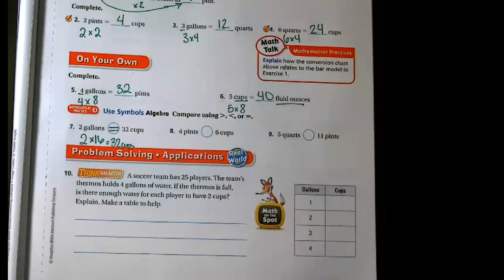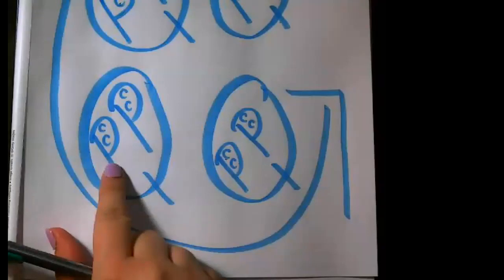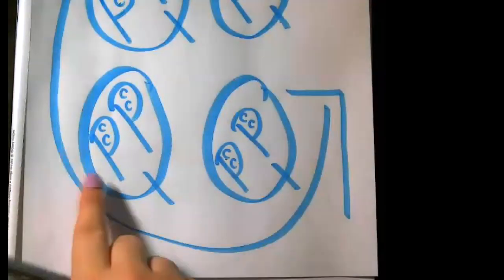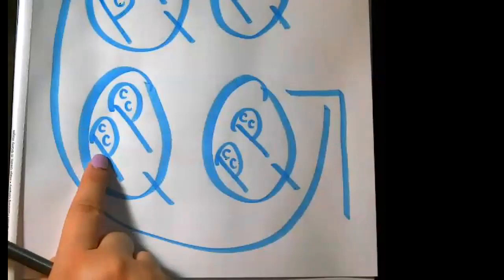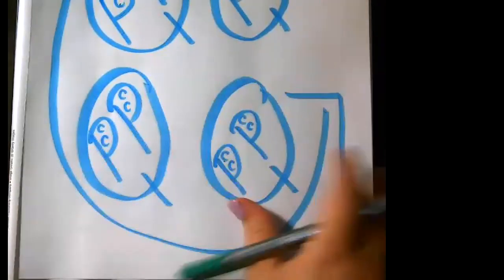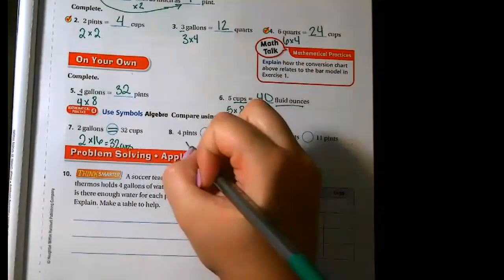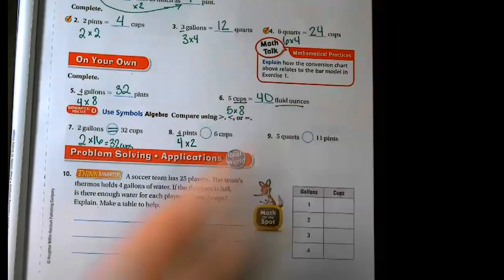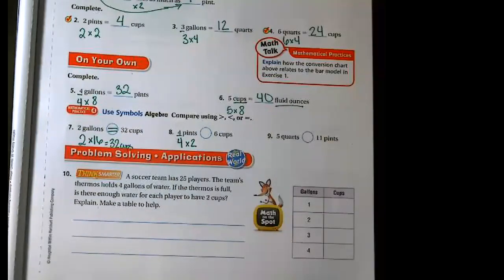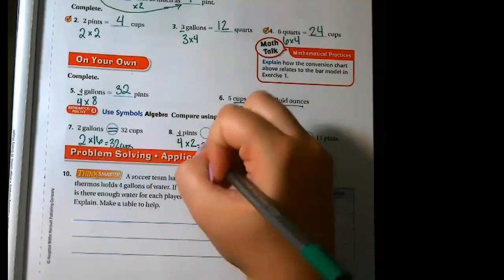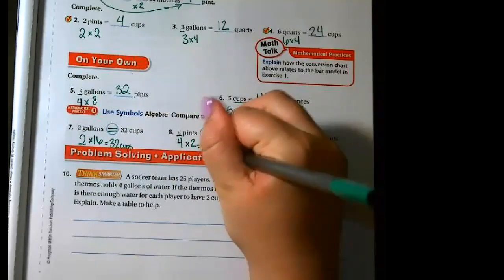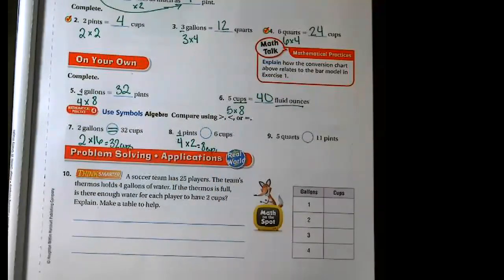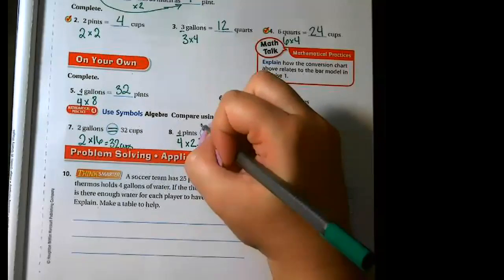From our next one, we have pints and cups. I look and ask how many cups are inside one pint — there are two C's. So I multiply by two, because that's how many cups are inside my pint. I take my four pints and do four times two, which is eight. So I either have eight cups or six cups — which one would my alligator want to eat? It would want to eat eight cups, or four pints.